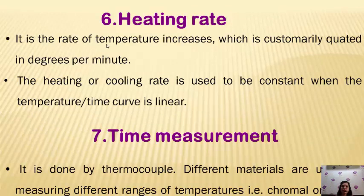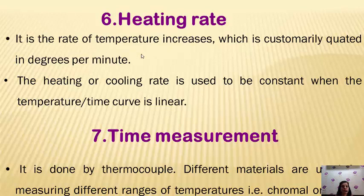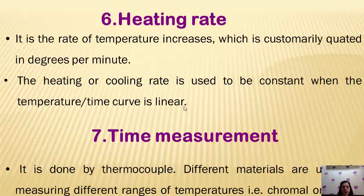Heating rate: usually the rate of temperature increase should be customized — a number of degrees per minute. Usually 3.5 degrees per minute is applied. Heating rate should be linear with respect to per degree. Heating and cooling rate should be constant to give linear change. Time measurement is done by the thermocouple. Different materials are used, like chromel and alumel.